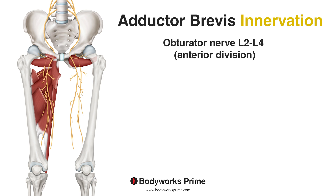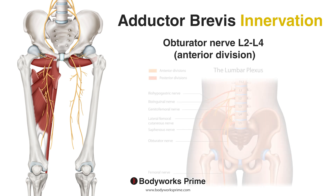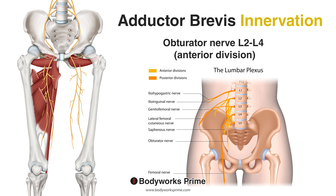Moving on to the innervation next. You can see pictured here the obturator nerve. The adductor brevis is innervated by the anterior division of the obturator nerve, which arises from the lumbar plexus with nerve roots at L2, L3, and L4. The obturator nerve is divided into anterior and posterior divisions as it passes through the obturator canal. You can see that split occurring in this picture, with the anterior division coming down here and the posterior division coming down here.